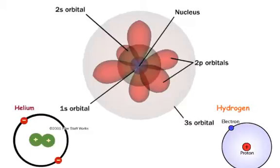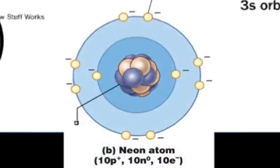The second shell has four orbitals, each holding two electrons. This shell is filled when it has four pairs or eight electrons. Neon has four pairs of electrons in this shell, so its orbitals are filled.